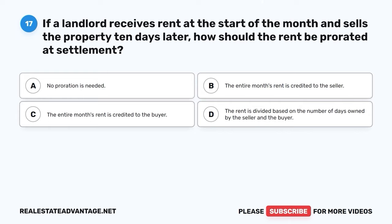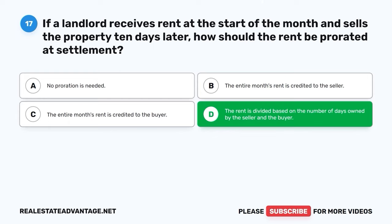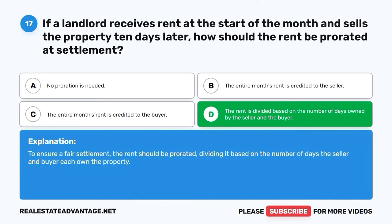Question 17. If a landlord receives rent at the start of the month and sells the property 10 days later, how should the rent be prorated at settlement? A. No proration is needed. B. The entire month's rent is credited to the seller. C. The entire month's rent is credited to the buyer. D. The rent is divided based on the number of days owned by the seller and the buyer. The correct answer is D. To ensure a fair settlement, the rent should be prorated, dividing it based on the number of days the seller and buyer each owned the property.